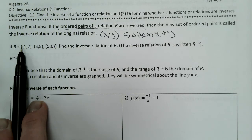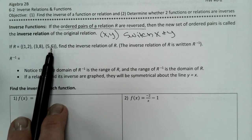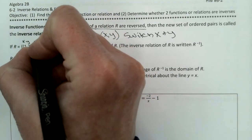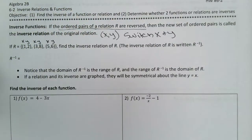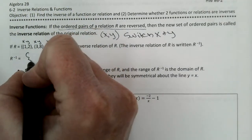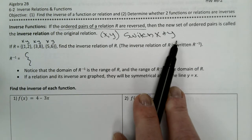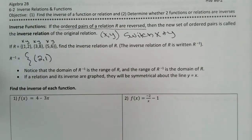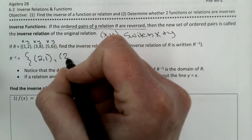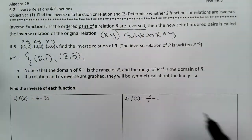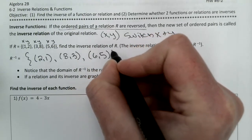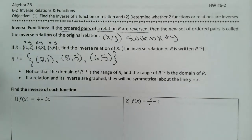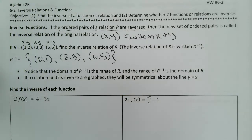So if you have this function r with these three ordered pairs, find the inverse of it. In an ordered pair, the first is x and the second is y. If you want to find the inverse, all you've got to do is switch x and y. So the inverse of (1, 2) is (2, 1). The inverse of (3, 8) is (8, 3). And the inverse of (5, 6) is (6, 5). That's all you've got to do.